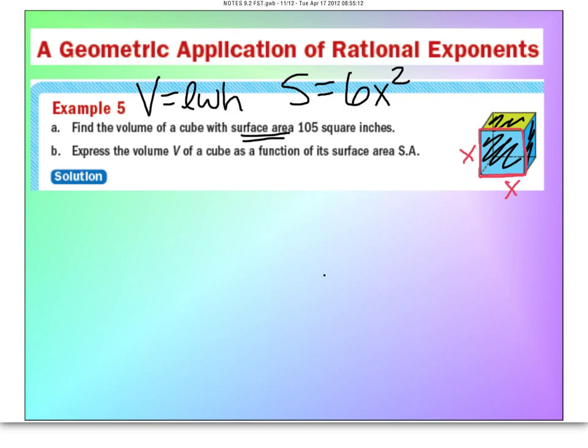Now, since I wrote surface area saying six times x squared, let's go back to volume and adjust that, because I was using length times width times height. But if it is a cube, the length, the width, and the height of this cube here is x, x, and x. Therefore, volume, why don't we just write it as this? Volume equals x cubed.